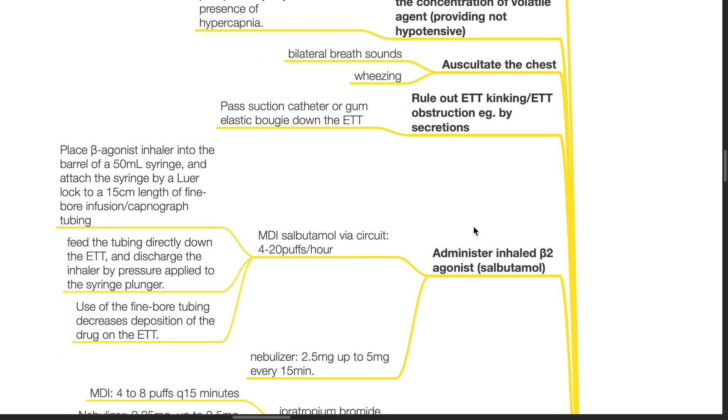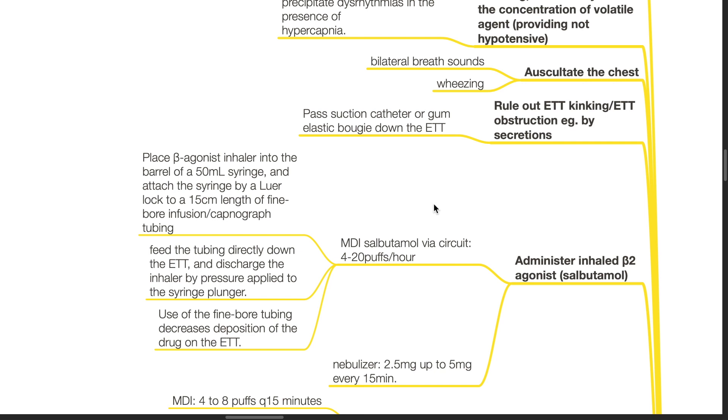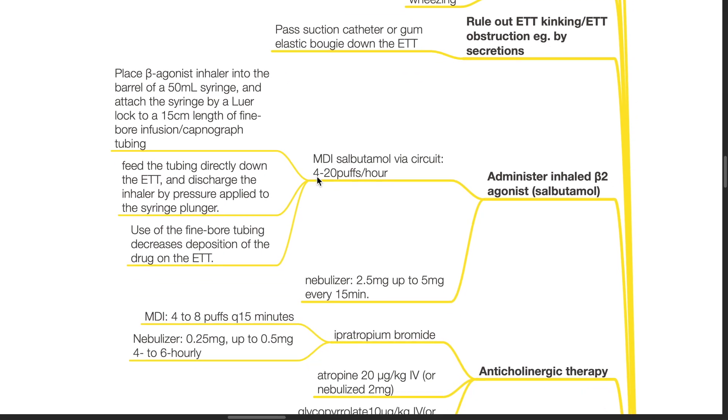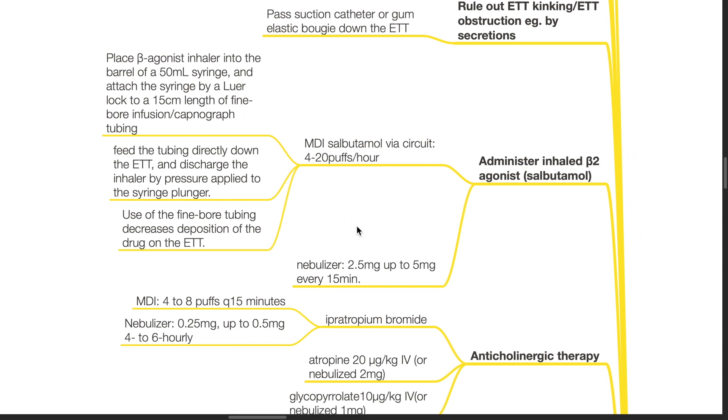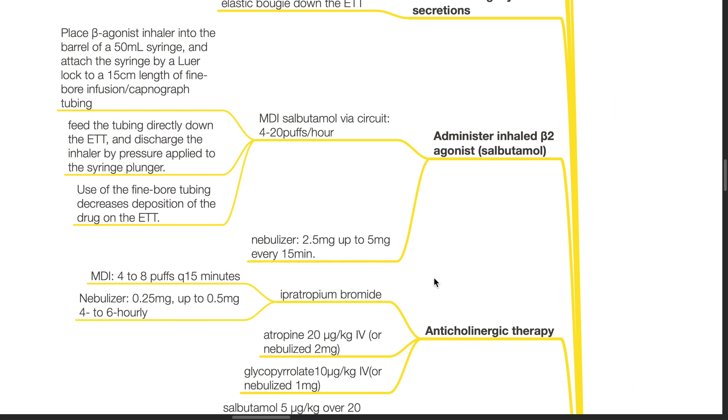Administer inhaled beta-2 agonists such as salbutamol via MDI or nebulizer. MDI salbutamol should be delivered 4 to 20 puffs per hour. To deliver it via circuit, place the beta-agonist inhaler into the barrel of a 50ml syringe, attach the syringe via Luer lock to a 15cm length of fine bore infusion or capnograph tubing. Feed the tubing directly down the ETT and discharge the inhaler by pressure applied to the syringe plunger. Use of fine bore tubing decreases deposition of drug on the ETT. Nebulizer dose is 2.5mg up to 5mg every 15 minutes.